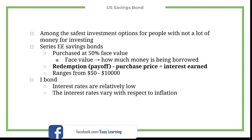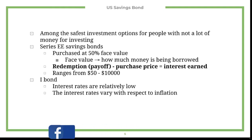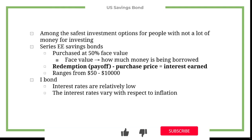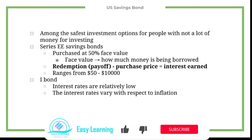These bonds range from $50 to $10,000. The second kind is called an I bond, and in these bonds interest rates are relatively low and they vary with respect to inflation.